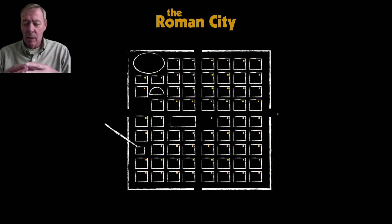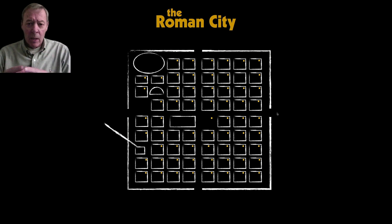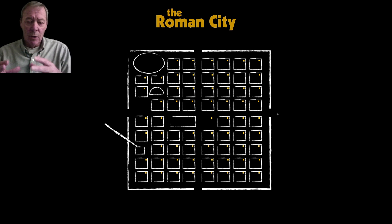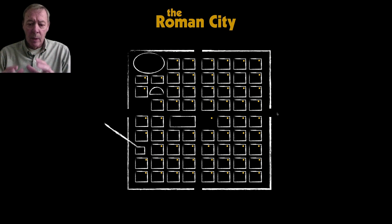Typical ancient cities grew up in an organic manner, following goat paths and expanding out from there. Those of you who have been to Europe and wandered inner-city areas know how very confusing and illogical the streets can be, making it difficult to find specific addresses. But in a Roman city, everything was laid out in a very logical grid.